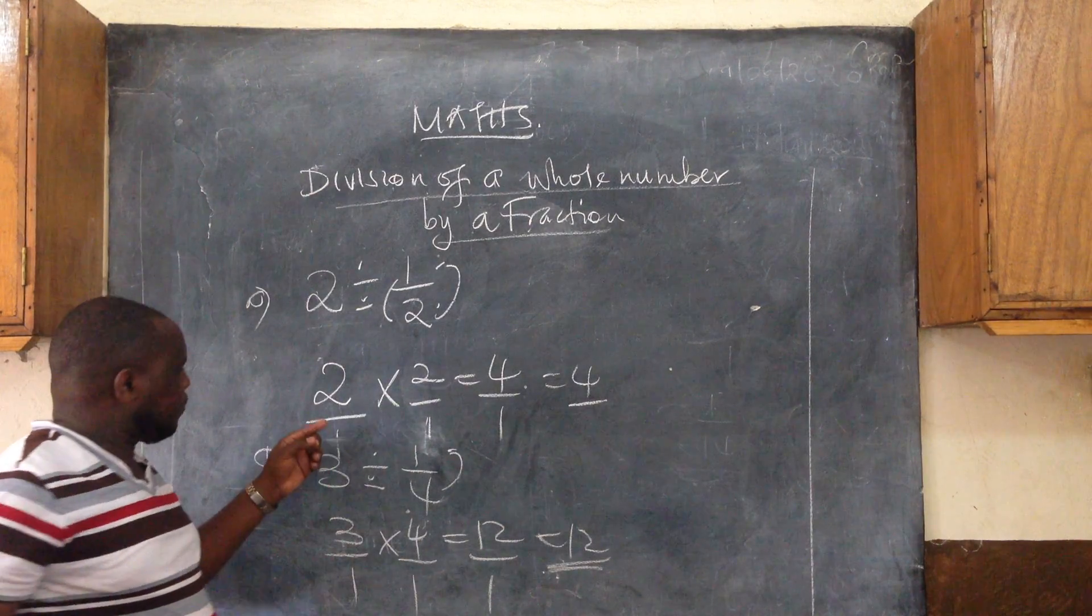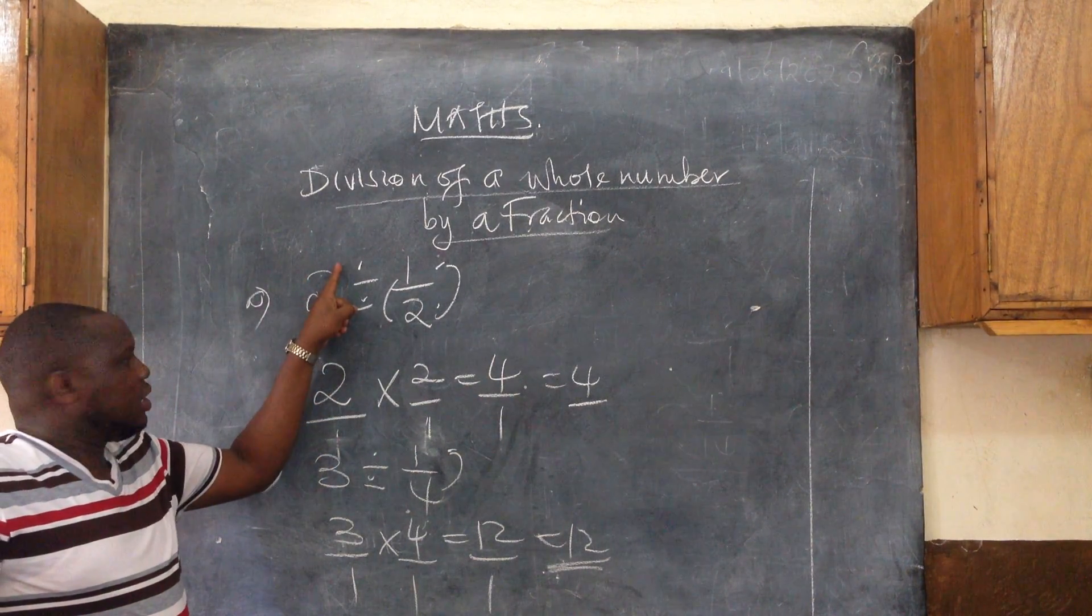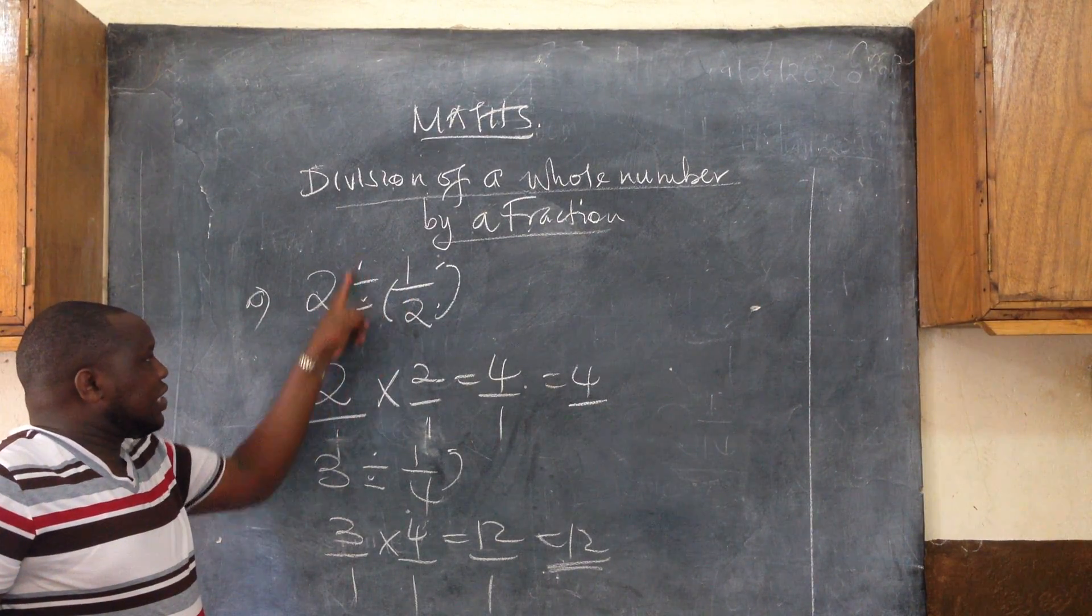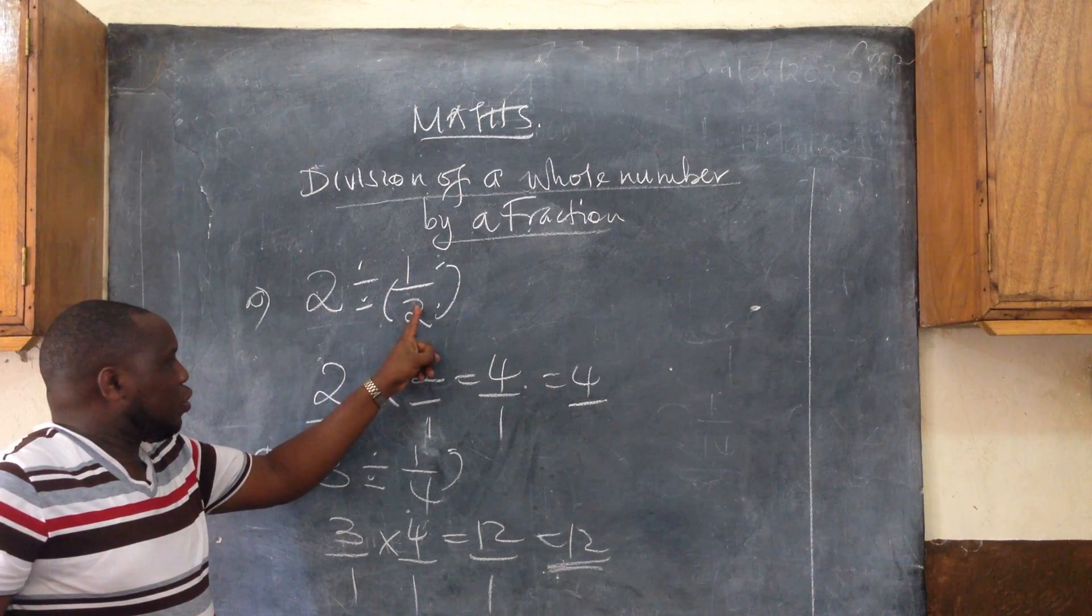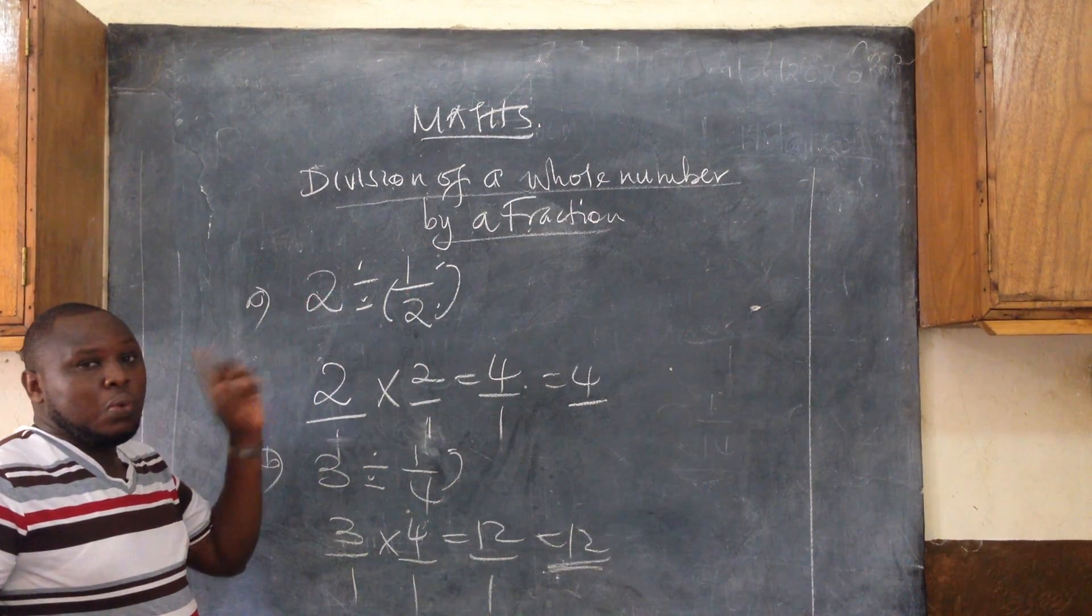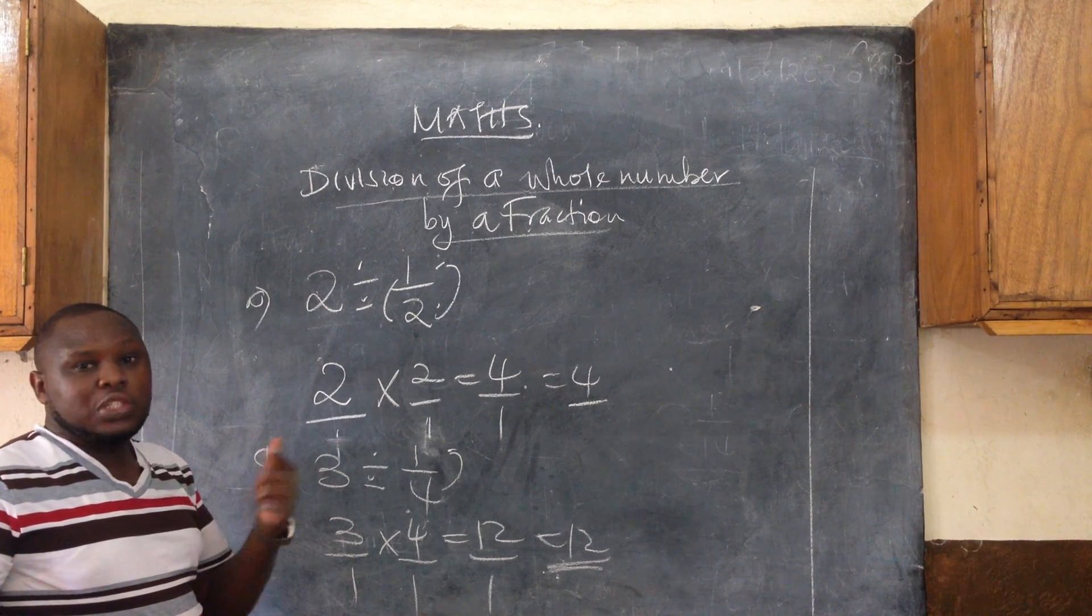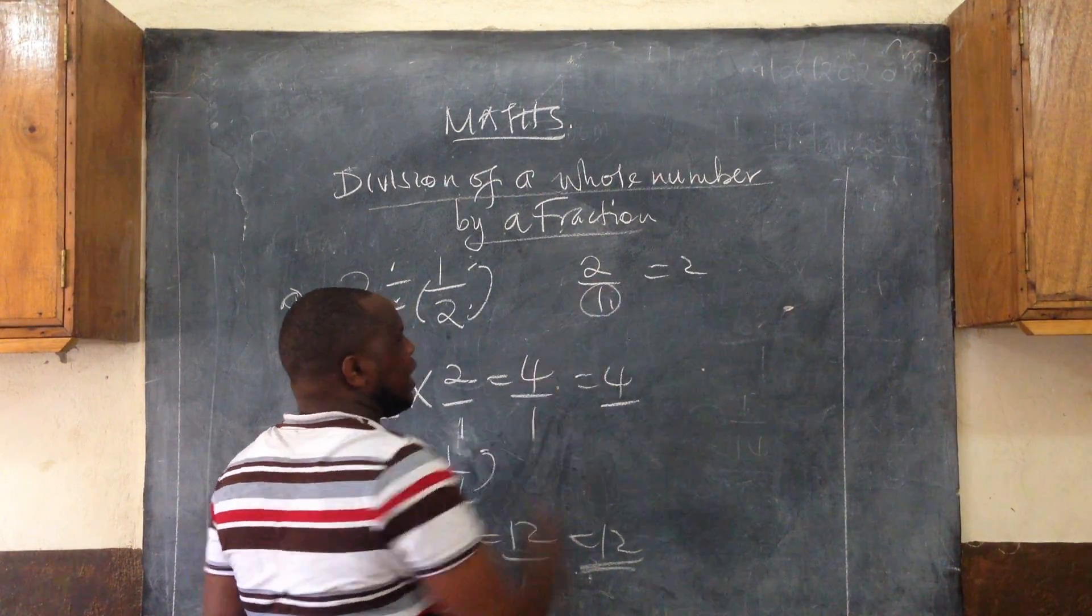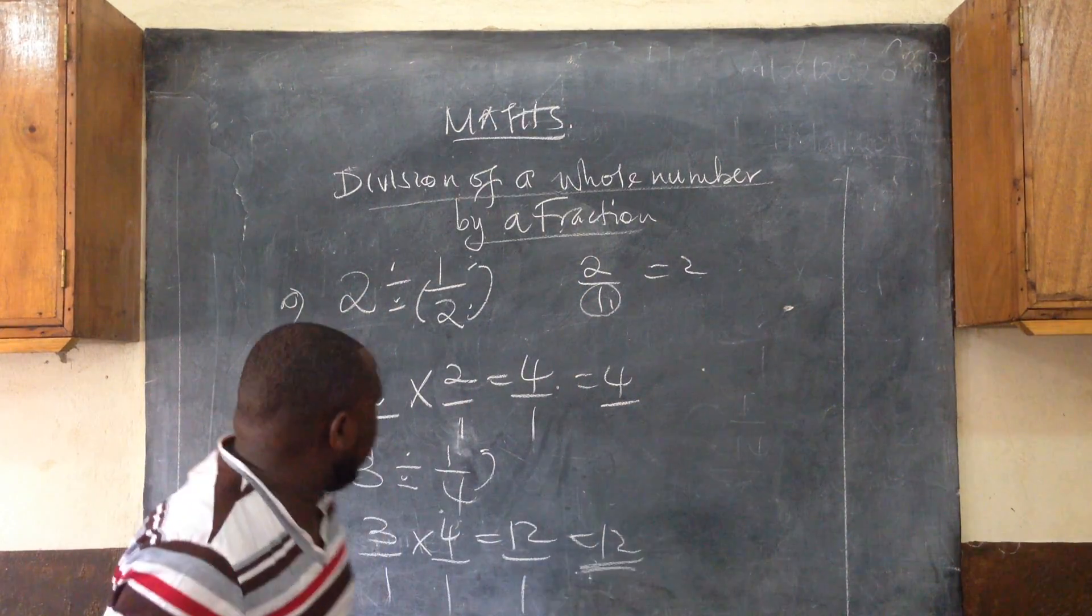You will understand that we don't touch the first number. We touch the second number and the sign. The sign changes to multiplication, and the second number changes to its reciprocal. What we do to the first number is just put it over 1, which does not change it. 2 over 1 is simply 2.